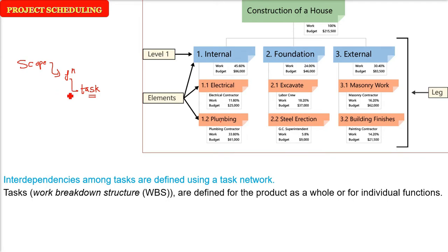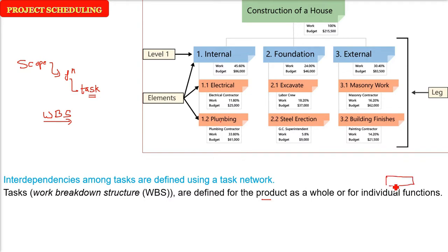To make this task network, first of all we need to do the WBS — work breakdown structure. This WBS is defined for the product as a whole, for the complete product, or for the important individual functions. For an individual function or a whole product, we divide it into tasks so that they can be dealt with easily.